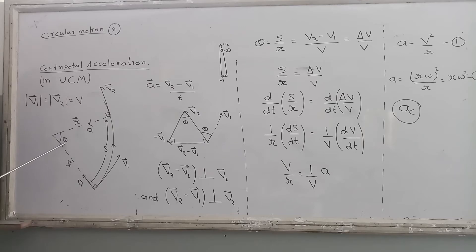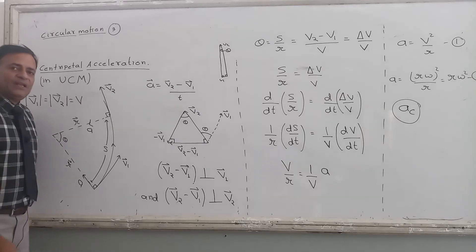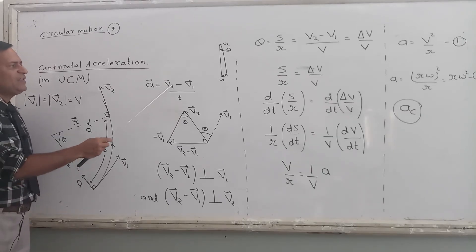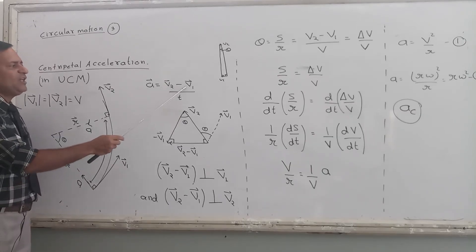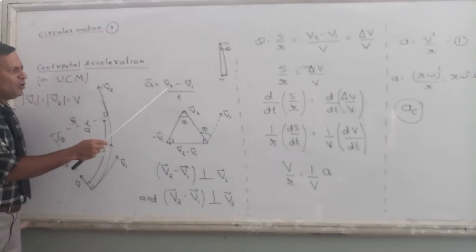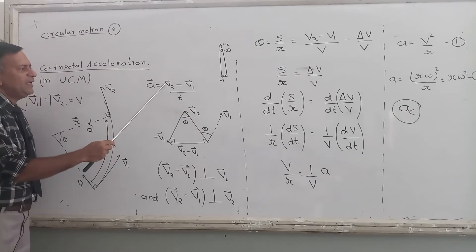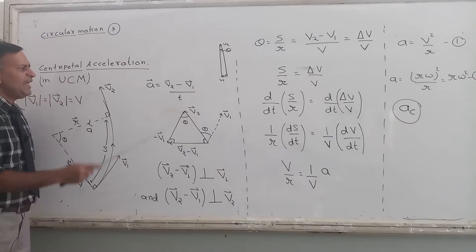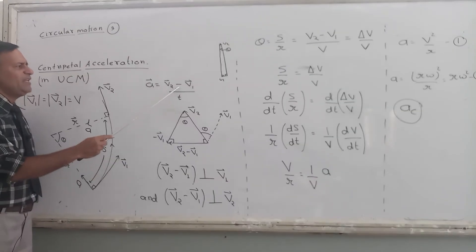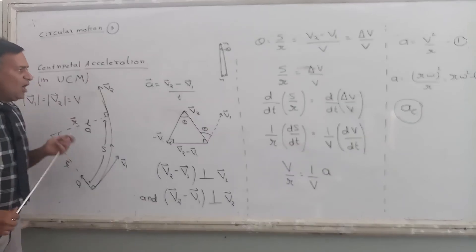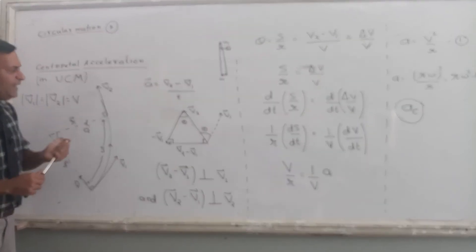Now calculating acceleration: acceleration equals final velocity minus initial velocity upon time — this is a vector operation. Whatever is the direction of v2 minus v1 will be the direction of acceleration.